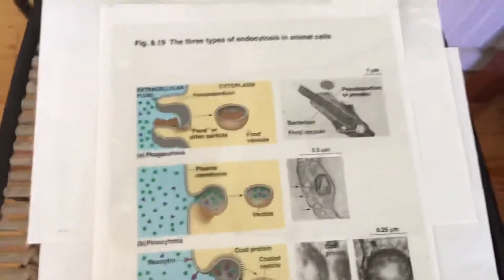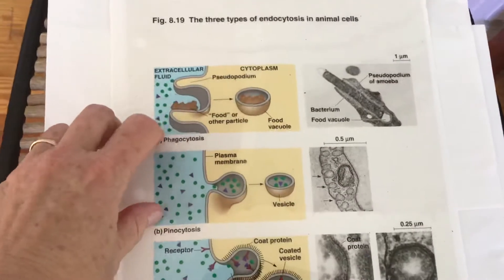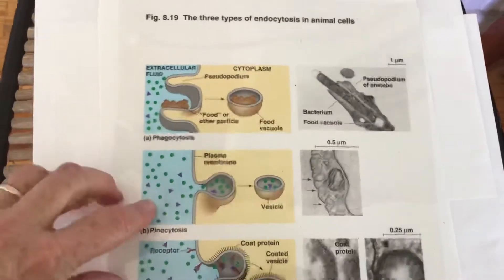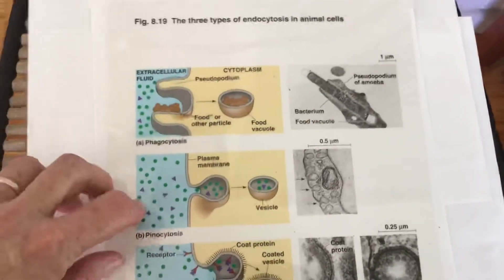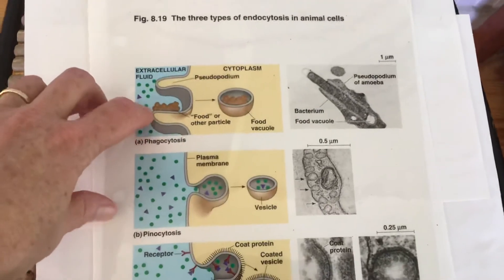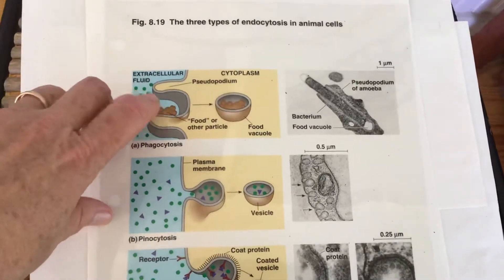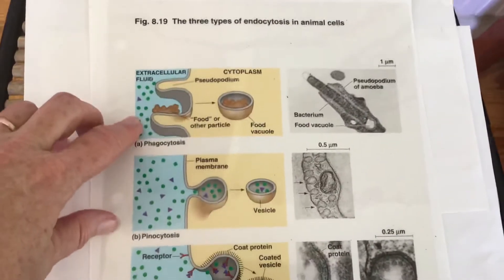Now there's different kinds of these. You can have a liquid that is being enfolded and this is called pinocytosis, or you can have a solid that is enfolded which is more like what I drew, this is called phagocytosis.